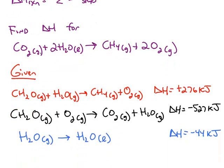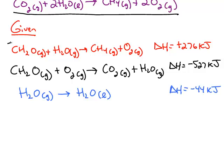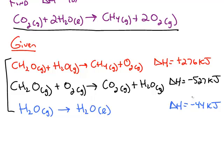So here's an example. We're trying to find delta H for this overall equation. And we're given three possible reaction steps, and we know delta H for each one of these steps.